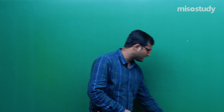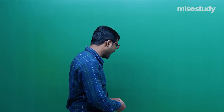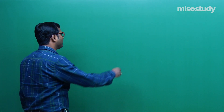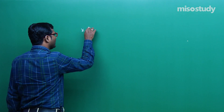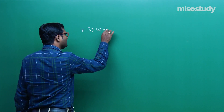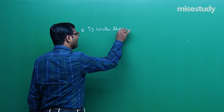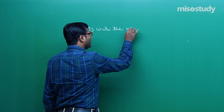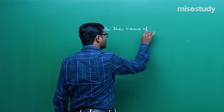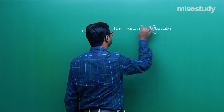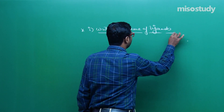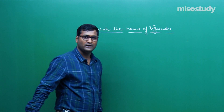Hello students, welcome to my class. In my last lecture, I was discussing about how to write the IUPAC name. Before writing the IUPAC name, you have to first write the proper name of the ligands. Do you remember? Write the name of the ligand.